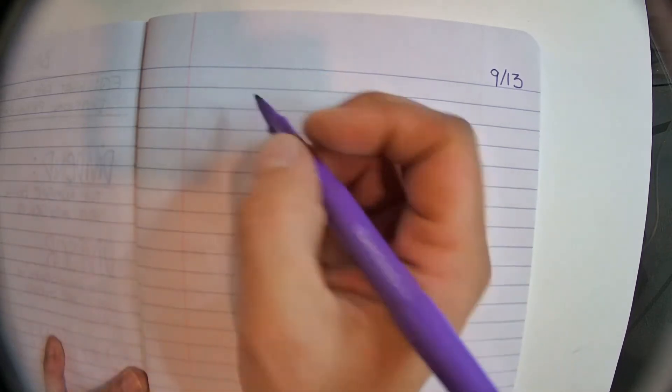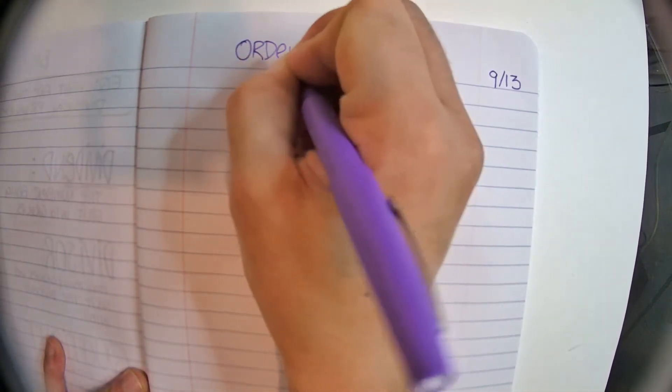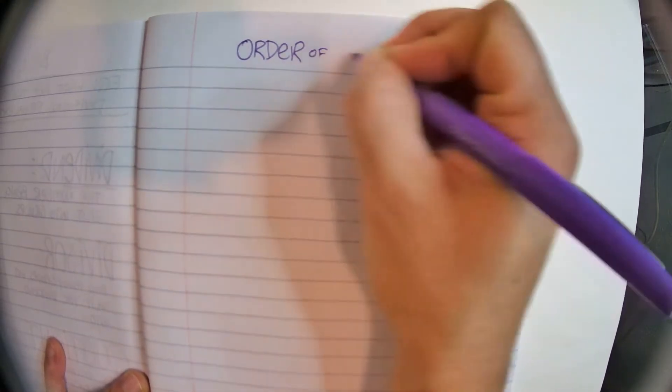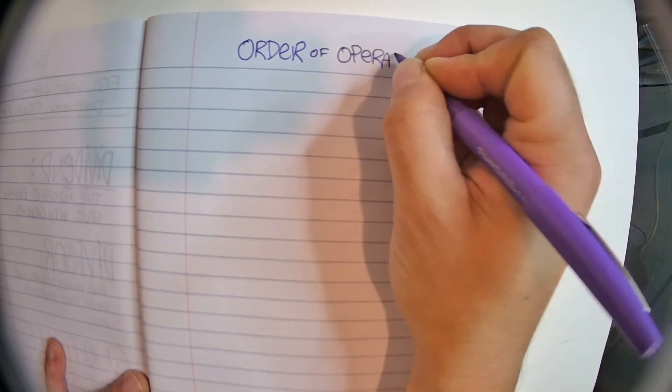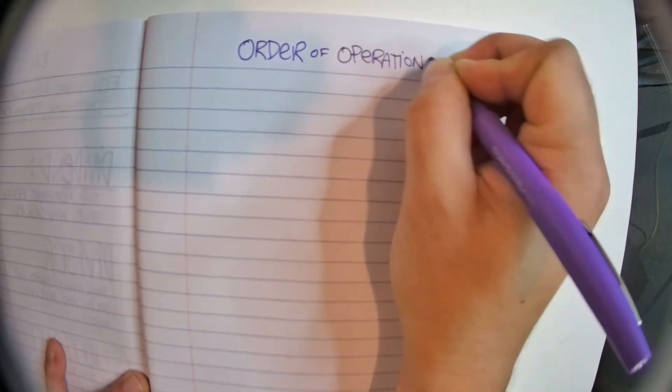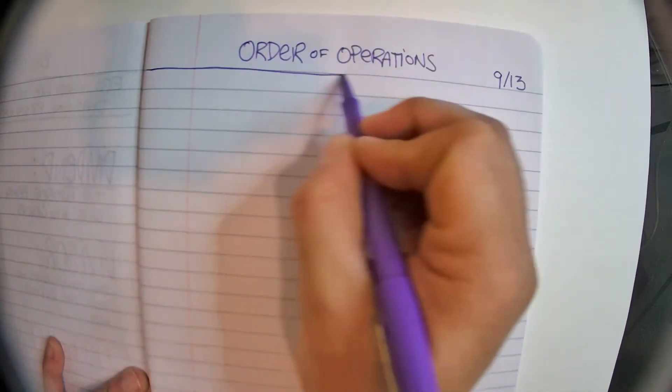All right, so let's go ahead and put the date. Remember, we use that as our page number. And then what we're going to do is write the title: Order of Operations, just like every time.